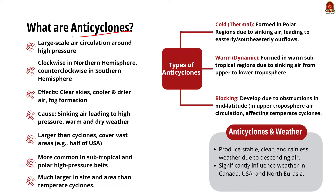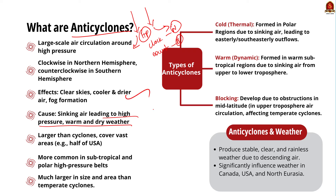Anti-cyclones are weather systems with high atmospheric pressure at their center, with air sinking towards the surface and spreading outwards as it reaches the ground. In the northern hemisphere, the movement is clockwise, and in the southern hemisphere, it is counterclockwise. Anti-cyclones bring clear, dry air and stable weather conditions, can cover very large areas, and can lead to cool weather during formation but tend to warm up as they move away from their origin. There are three types: cold anti-cyclones, which form over polar regions; warm anti-cyclones, which occur in sub-tropical regions due to air descending from higher to lower levels of the atmosphere; and blocking anti-cyclones, which develop in mid-latitudes and can stop the movement of other weather systems like cyclones.